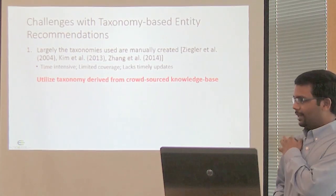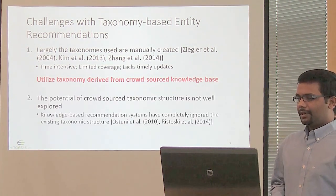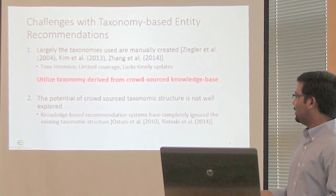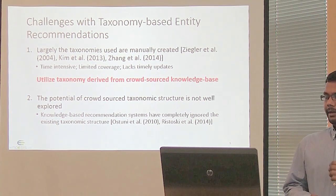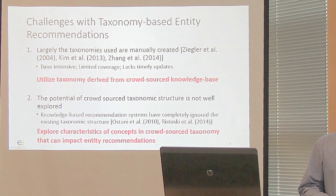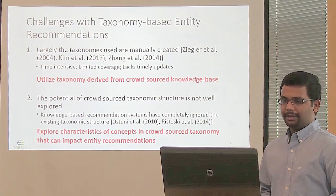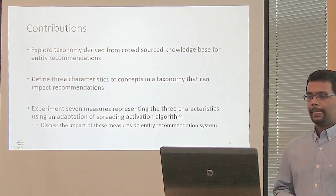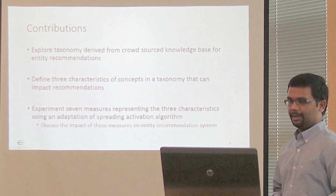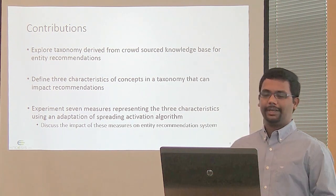This challenge can be addressed by utilizing taxonomies derived from crowdsourced knowledge bases. However, the potential of crowdsourced knowledge taxonomies has not been really explored thus far. In the past, recommendation systems which have used knowledge bases as background knowledge have completely ignored the taxonomic structures. In this thesis, I have explored the characteristics of concepts in a crowdsourced taxonomy that can impact entity recommendations. My contributions include exploring a taxonomy derived from a crowdsourced knowledge base for entity recommendations, and defining three characteristics of concepts in a taxonomy that can impact recommendations.